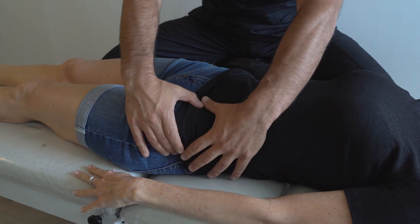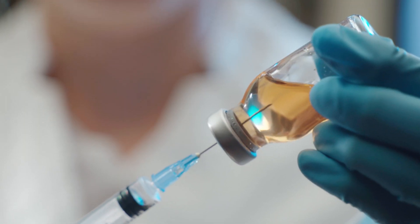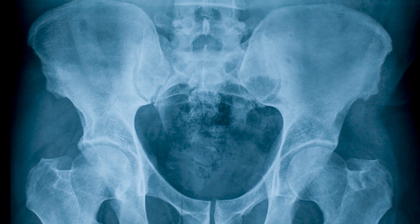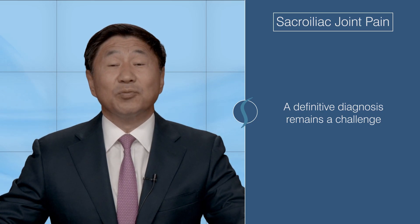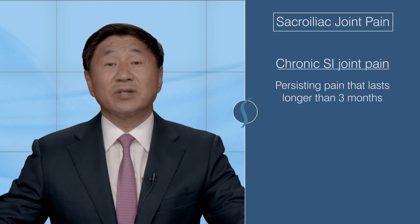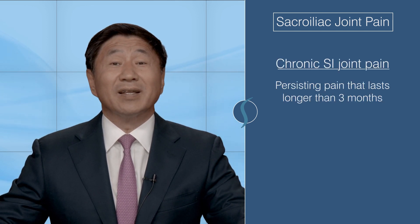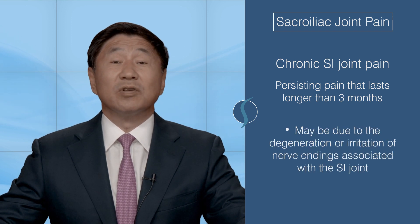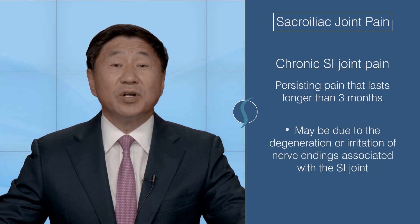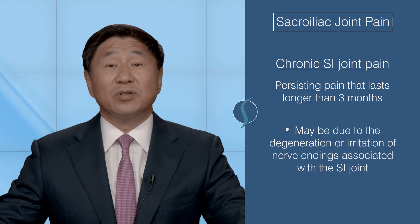Sacroiliitis is often confused with pain from the facet joints of the spine. While a physical exam and some diagnostic injections using lidocaine around the joint can suggest the source of the pain, the definitive diagnosis remains a challenge. Chronic SI joint pain, defined by persisting pain that lasts longer than three months, may be due to the degeneration or irritation in the free nerve endings associated with the SI joint.